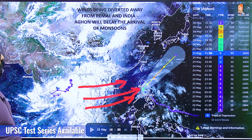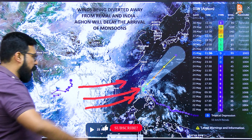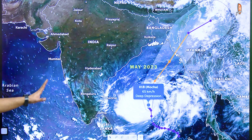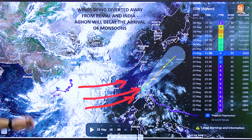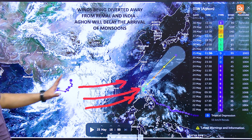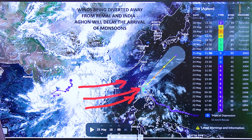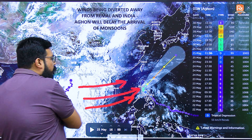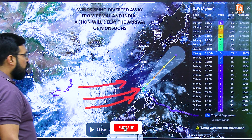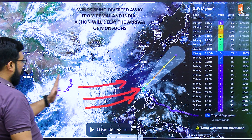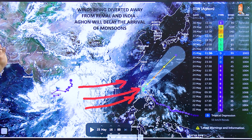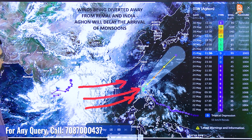This year again we saw the formation of Ramal towards the end of May. Ramal followed a similar path to Mocha. Simultaneously, Agon was being formed over the Philippines, and this tropical cyclone pulled moisture away from Ramal — depleting the moisture from Ramal itself. So technically, the tropical cyclone was moving moisture away from India while another parallel tropical cyclone pulled moisture away from Ramal itself.